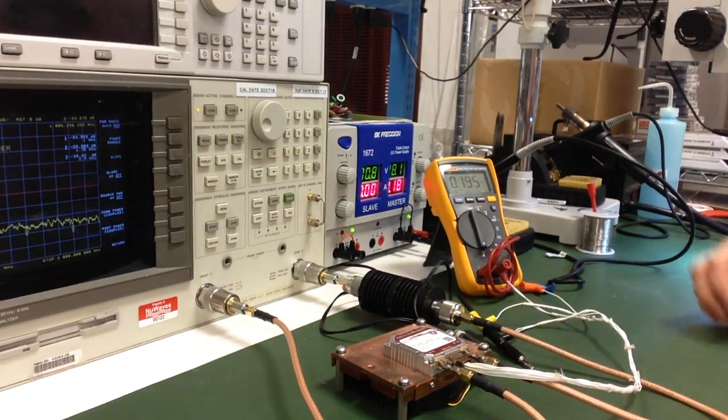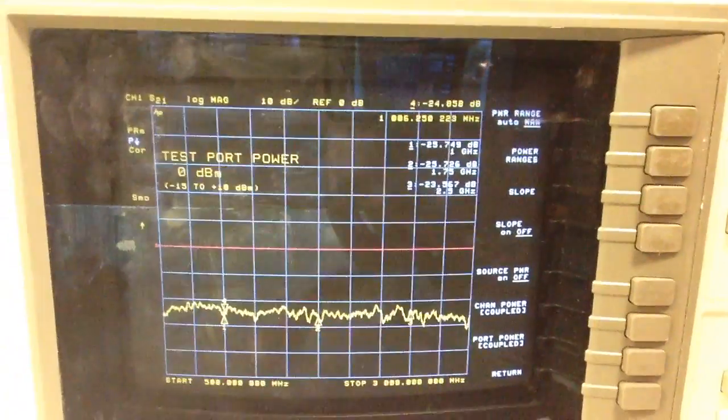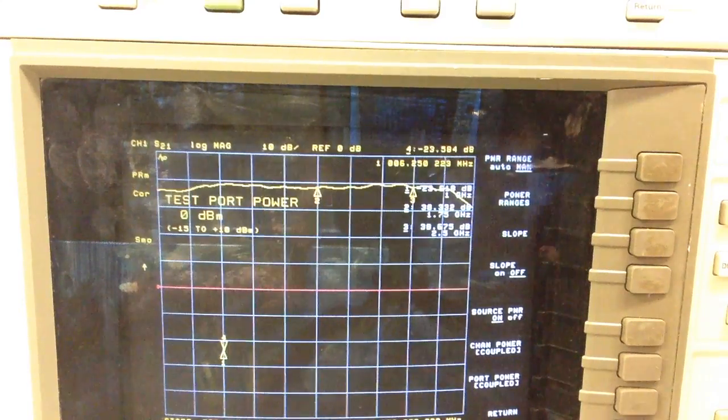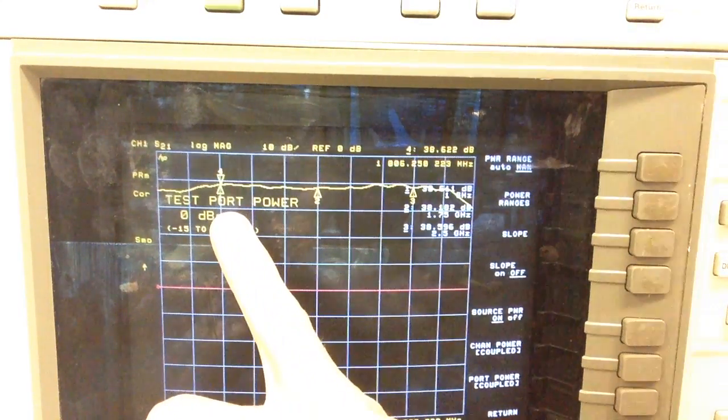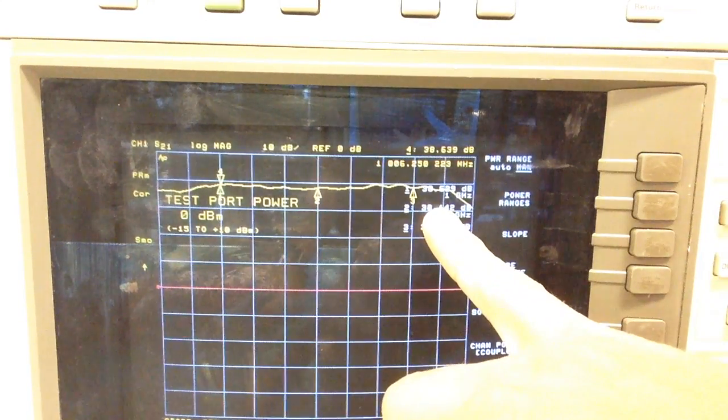So we're all set up and ready to go. I'll show you a closer look at the network analyzer. I'll turn on my source power, with marker one set at one gigahertz and marker three set at two and a half gigahertz.